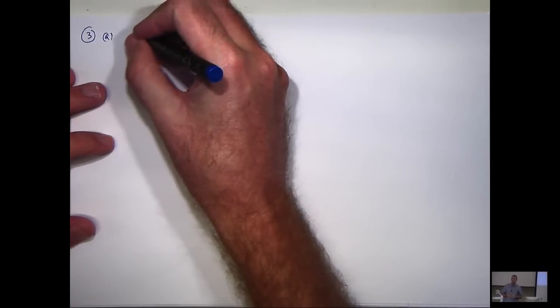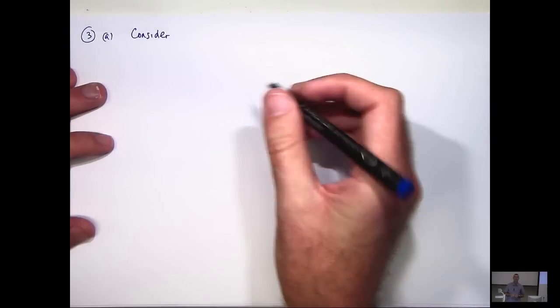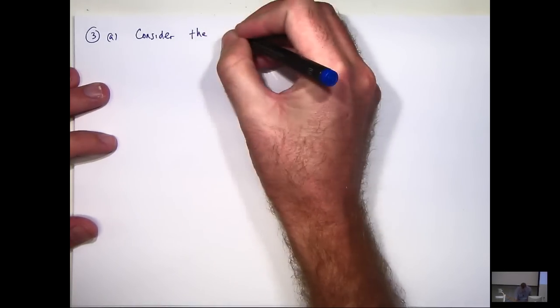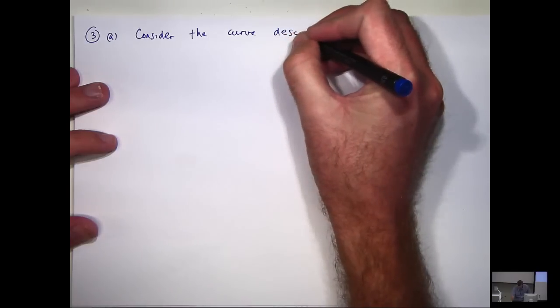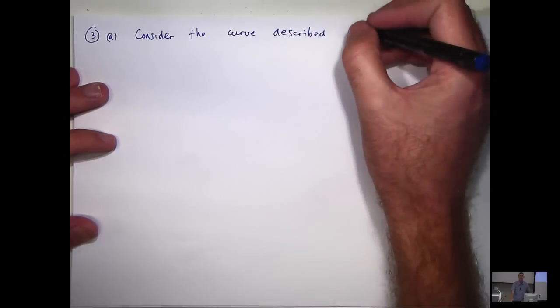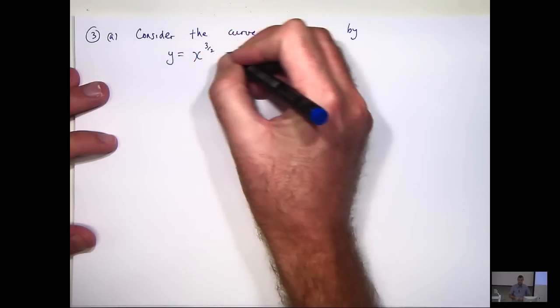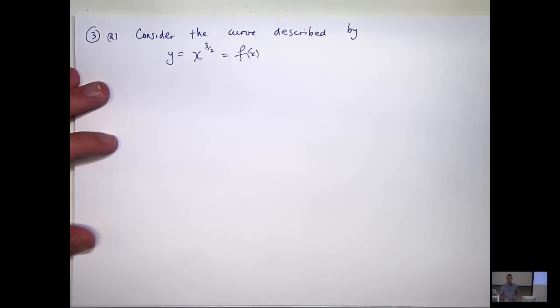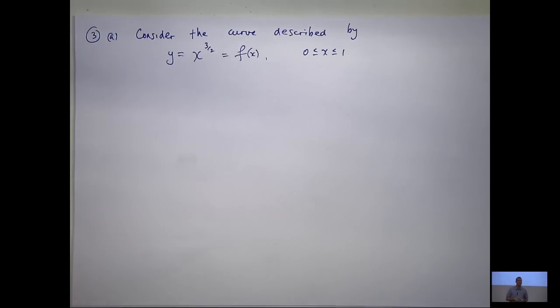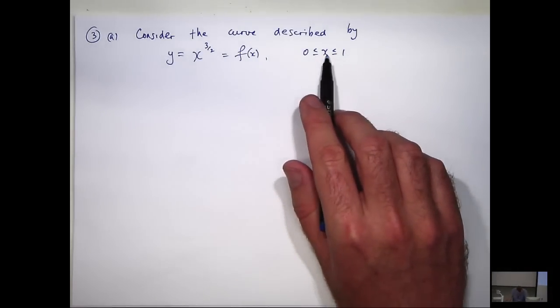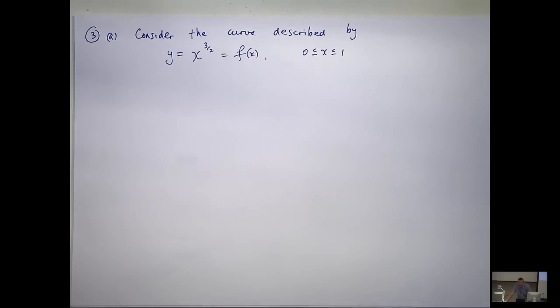All right, so in the first question, we are asked to consider the curve. Now, you'll see that we're only interested in the interval, the x values from 0 to 1, and we're asked to calculate the arc length of this curve. Now, there's a definite formula for the arc length that relies... Anyone remember how you derive the formula? What the basic idea is?